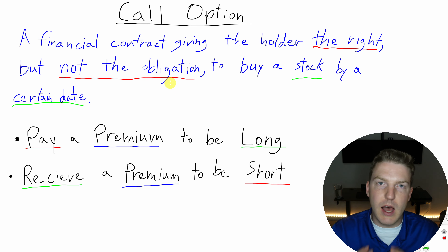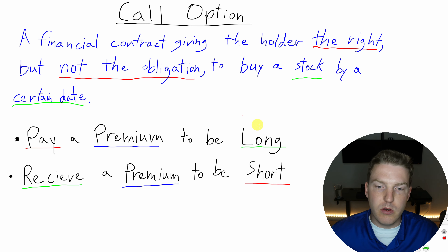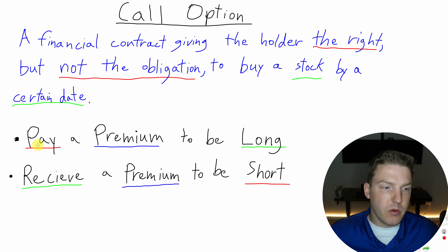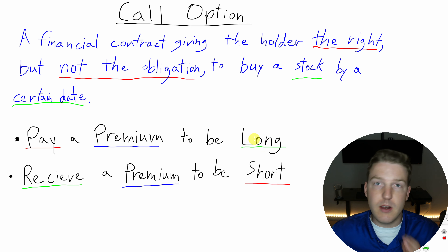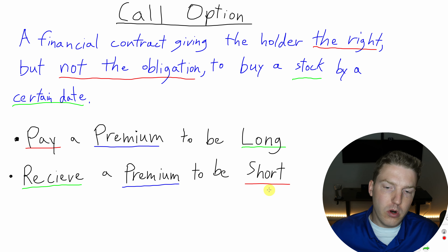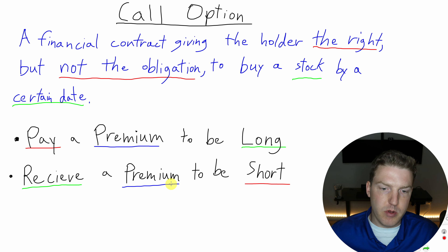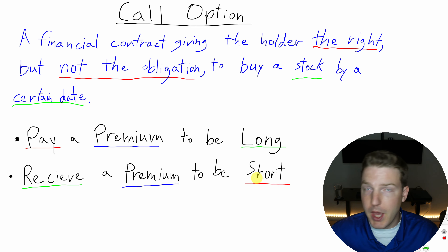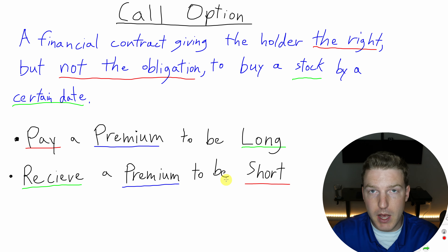There are two different sides we can be on in an option contract. The first is long — we pay a premium to be long, meaning we own the contract. Or we could be short, which means we received a premium to be short and are now obligated to potentially pay the person who bought the contract from us if they exercise the option.